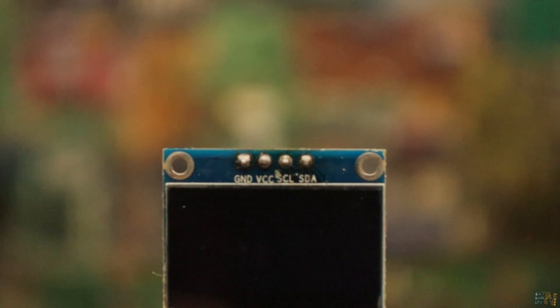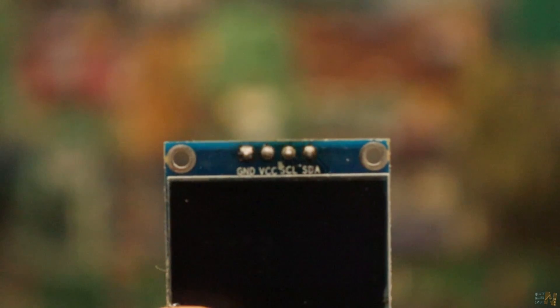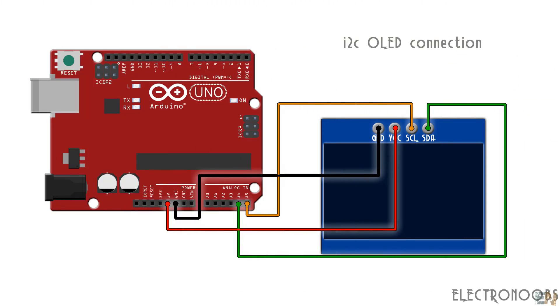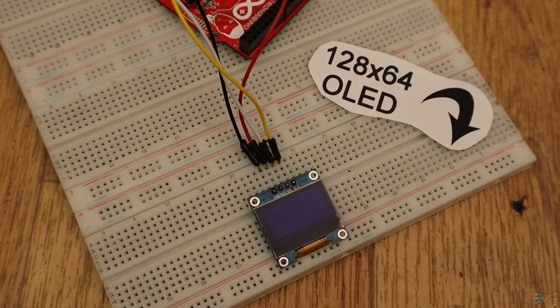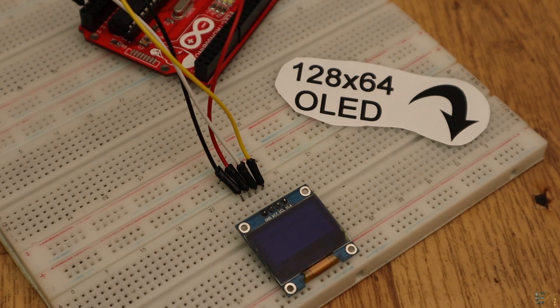Once again it has 4 pins, power, ground, data and clock. Connect it to the Arduino as in this schematic and open the third code for this video called example I2C OLED 64 or 32, depending on the use size of the OLED screen.